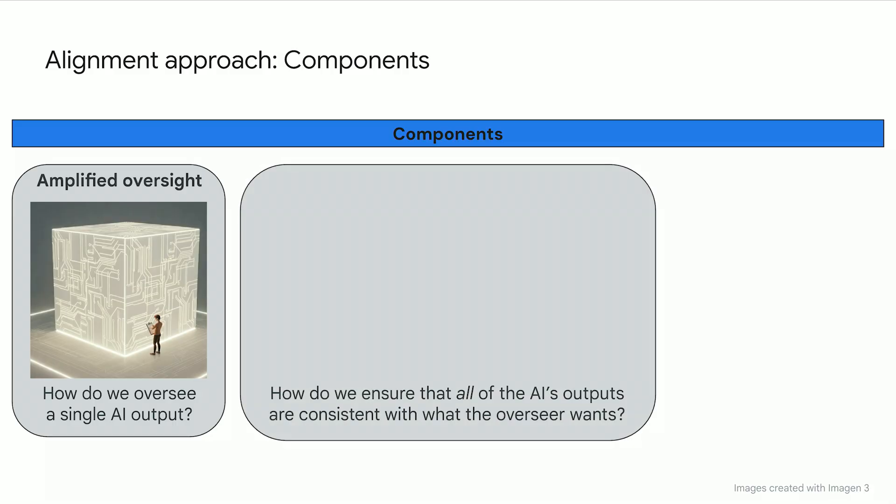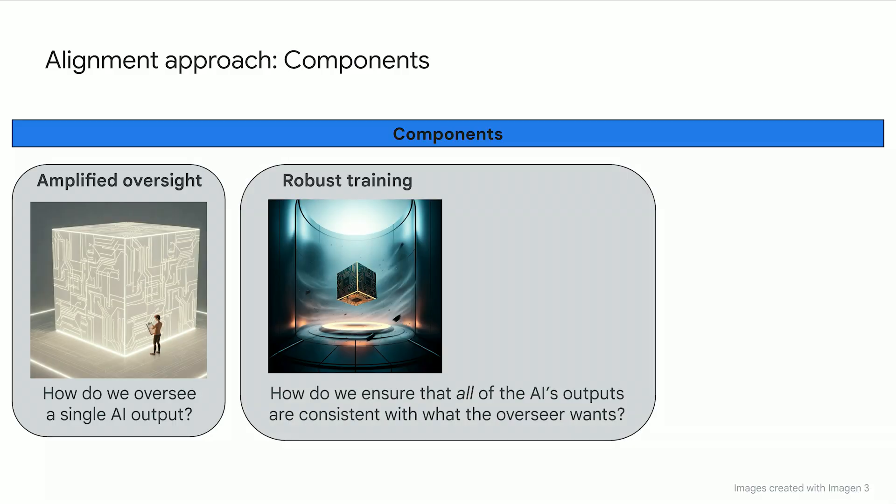There are two different strategies for this. First, we could make the AI system robust by training it across a wide variety of possible situations that might come up. That way, even in new situations at deployment time, it will continue to do the right thing.